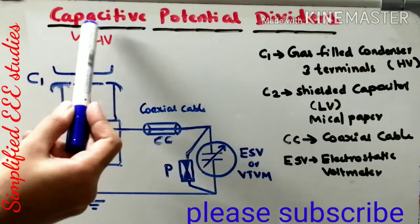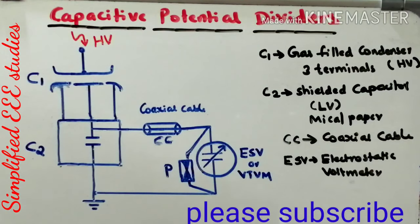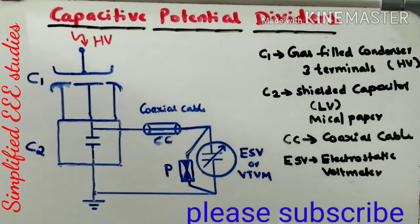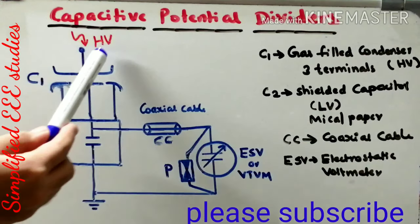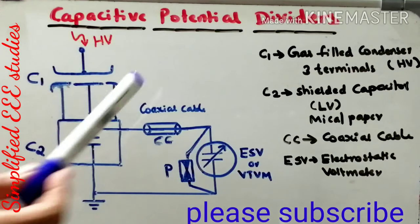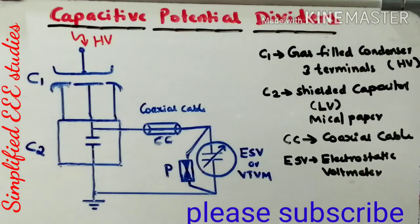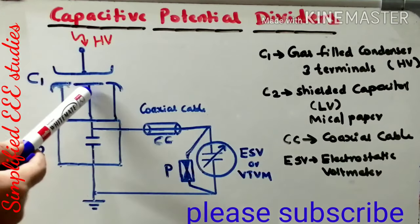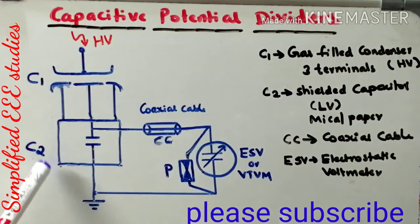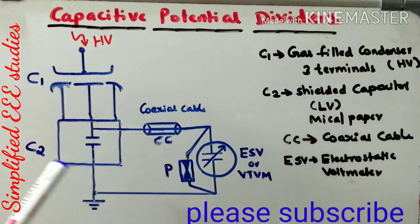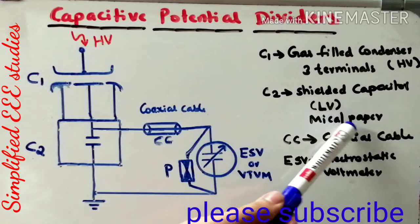Let us consider the circuit diagram of Capacity Potential Divider. Our ultimate goal is to measure the high voltage which you operate externally. The overall high voltage is divided with the help of Capacitors C1 and C2. Here, C1 is known as Gas-Built Condenser or Gas-Built Capacitor. It comprises of three terminals and is also known as High-Voltage Capacitor. Similarly, C2 is known as Shielded Capacitor. To avoid stray loss, we provide a suitable shield.